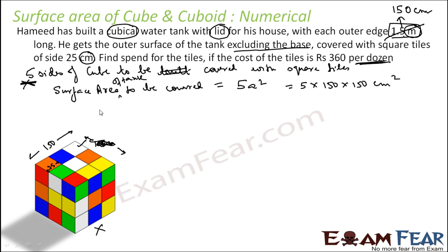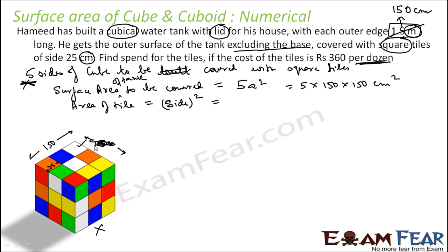Now let's find the area of each tile. We assume the tile is two-dimensional, ignoring its depth. It is a square tile with side 25 centimeters, so the area is 25 × 25 centimeter square.